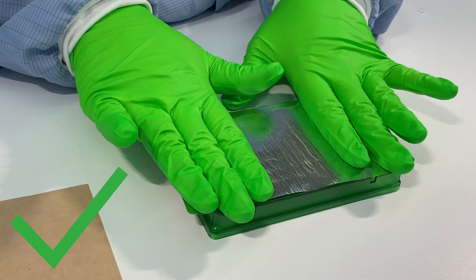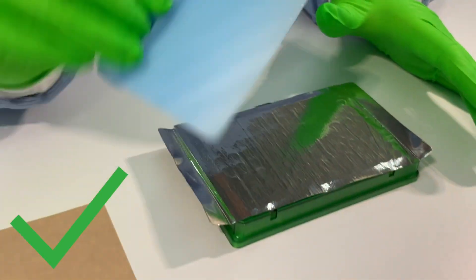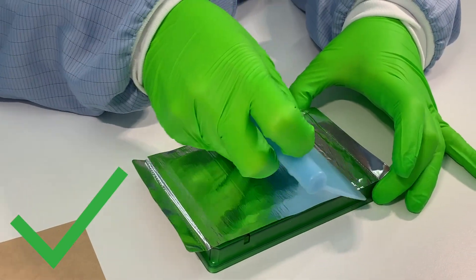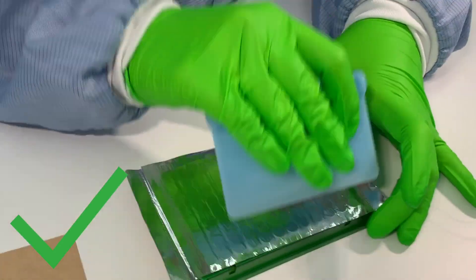Slightly press the seal down. Take the plate sealer and firmly pull it over the plate from left to right and then from top to bottom.